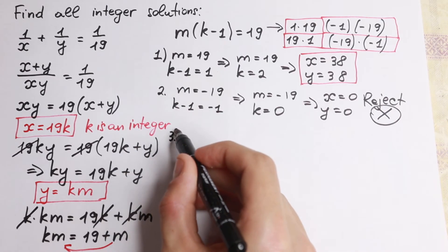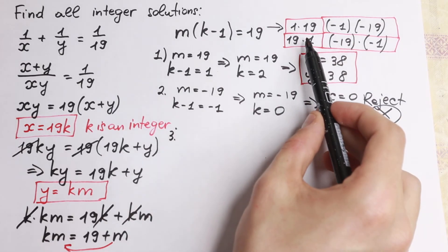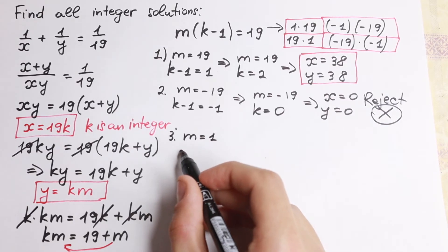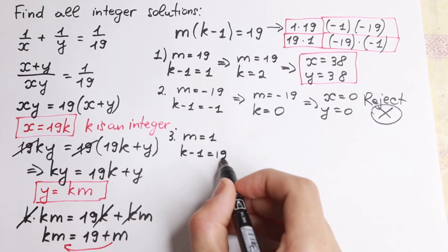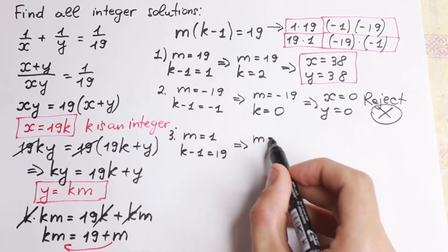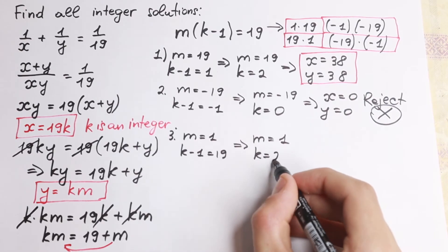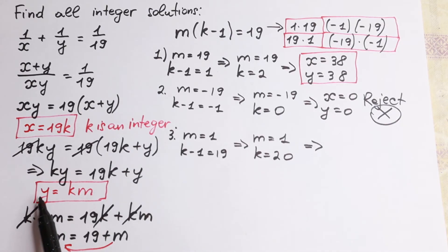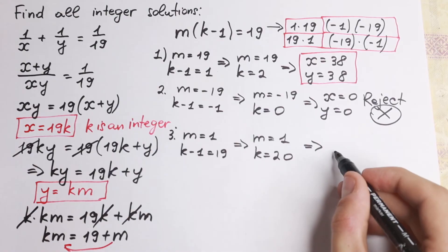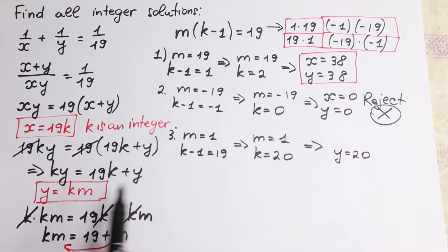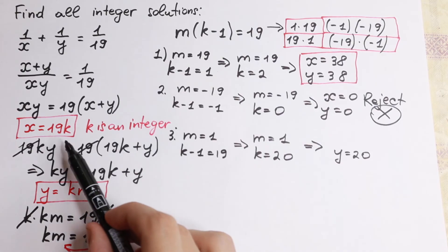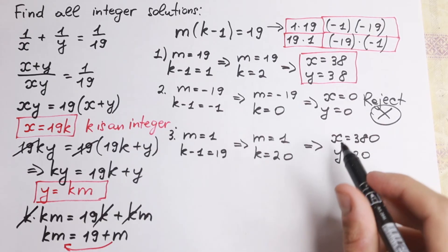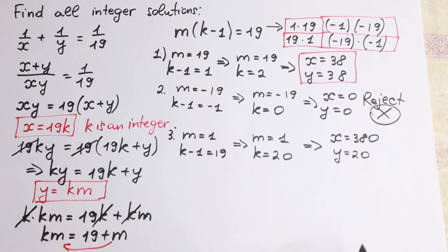For the third case, m equal to 1 and k minus 1 equal to 19. So m equals 1 and k equals 20. Plugging in, y equal to km gives y equal to 20, and x equal to 19k gives x equal to 380. This is our second pair of solutions: (380, 20).